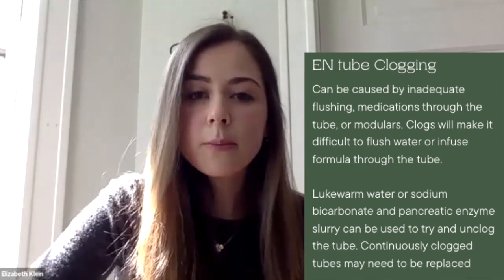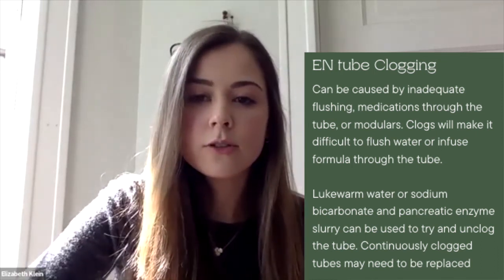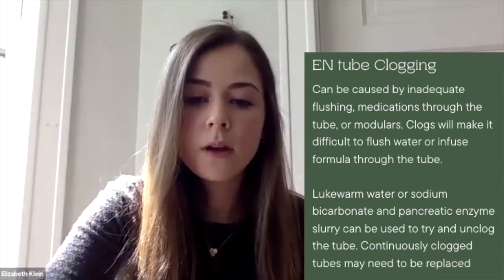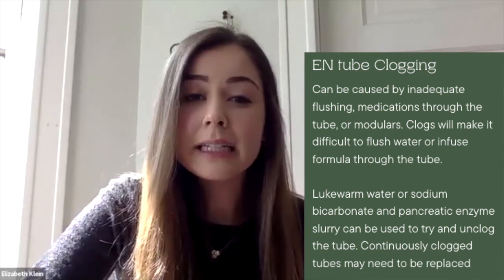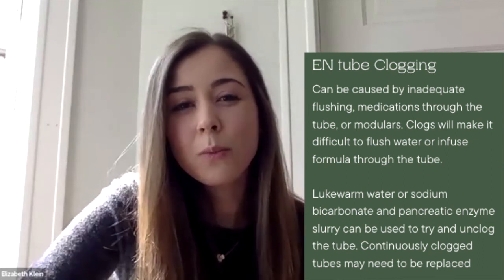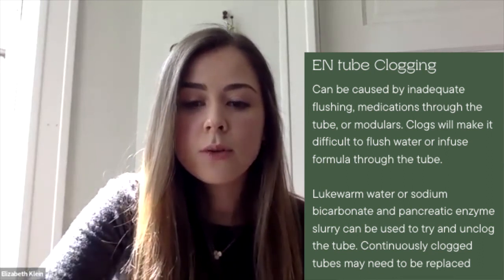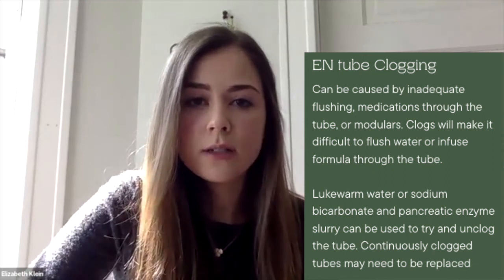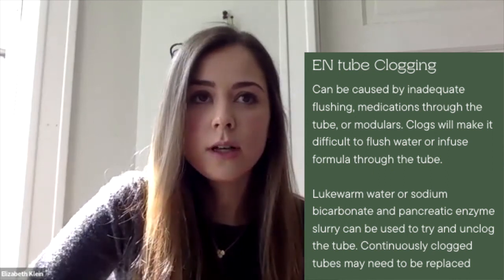If it's a temporary tube like a nasogastric tube, you would just take that tube out and replace it. Tubes like J-tubes or Dobhoff tubes have a smaller bore and are more prone to clogs, so if a patient has those kinds of tubes, make sure they know they need to flush the tubes well. That is everything — I hope you enjoyed and found this helpful. Thank you for watching and we'll see you next time.